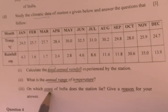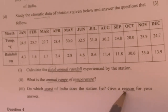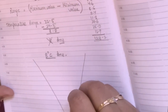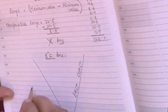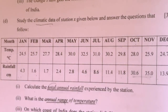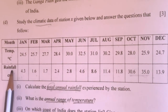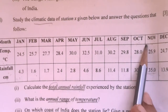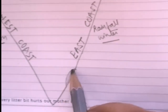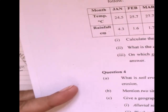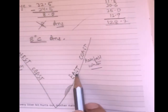The next question is: on which coast of India does the station lie? Give the reason. Consider peninsular India — the southern part. This is the east coast, and the opposite is the west coast. We will consider the rainfall now. If rainfall is maximum during the months of October and November, you know that is because of the retreating monsoon, and only the Coromandel coast gets rainfall at that time. So your answer will be: this station lies on the east coast of India.